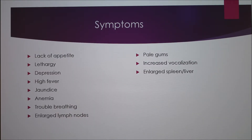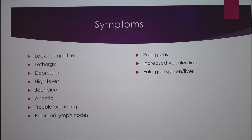Some symptoms are: they can't eat, they're tired all the time, they have a high fever, they'll get jaundice and anemia. Their lymph nodes will enlarge, their gums will get pale from losing blood because the blood gets infected and the parasite destroys the cells. They'll become more lethargic, and their spleens and livers will enlarge because of all the blood being destroyed.